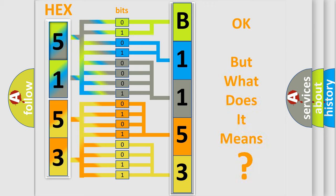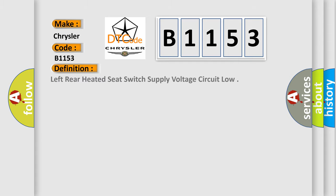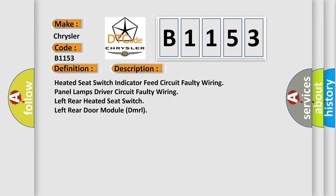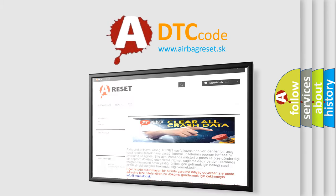We now know in what way the diagnostic tool translates the received information into a more comprehensible format. The number itself does not make sense if we cannot assign information about what it actually expresses. So, what does the diagnostic trouble code B1153 interpret specifically for Chrysler? The basic definition is: Left rear heated seat switch supply voltage circuit low. A short description of this DTC code includes: heated seat switch indicator feed circuit, faulty wiring panel lamps, driver circuit faulty wiring, left rear heated seat switch, and left rear door module (DMRL). The Airbag Reset website aims to provide information in 52 languages.